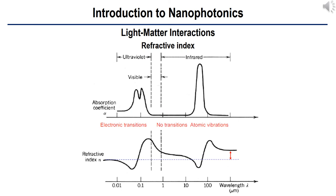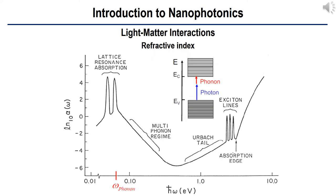The refractive index of materials is not constant but a function of wavelength or frequency. For insulators, we observe two distinguishable behaviors: strong absorption in short-wavelength regions due to electronic transitions requiring higher energy (typically ultraviolet range), and strong absorption in long-wavelength regions due to atomic vibrations requiring smaller energy (typically mid-infrared or terahertz range). For typical semiconductors, the absorption coefficient exhibits two distinguishable peaks: a smaller energy peak for phonon vibration or lattice resonance, and a greater energy peak for exciton absorption, which typically requires visible or shorter wavelength light.